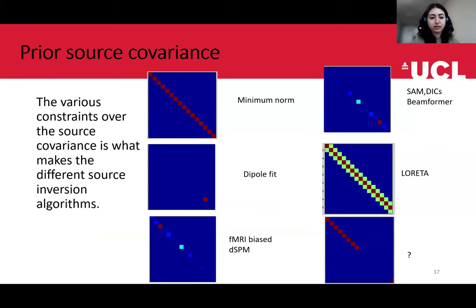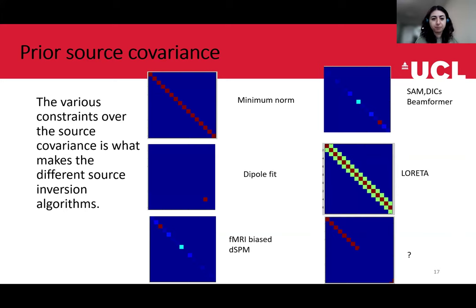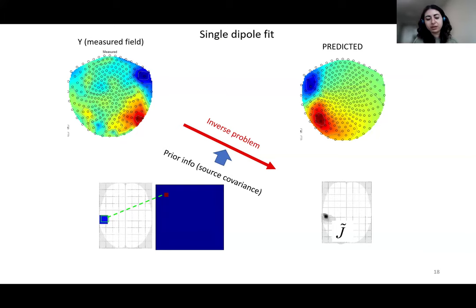Different groups have historically given different acronyms and names to different types of assumptions, but these are basically what define the different algorithms of source modeling. Just to make clear what is actually happening when we use these generative Bayesian models: you have your measured data Y, then you use prior information on your source covariance. For example, you can assume there is only one particular source active in the source space and define your covariance matrix accordingly. You use that to generate your predicted source distribution J-hat, and then check if that prediction matches your measurements — either via model comparison or other performance metrics.